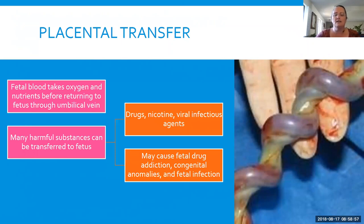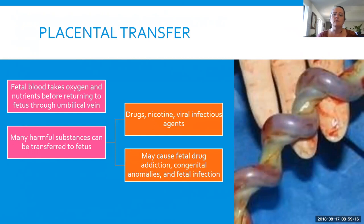The placenta will try to keep some things out, but unfortunately there are some things that get through to the baby. Most drugs get through. Nicotine and viral infections can get through. If mom is using drugs, it will get through to the baby and the baby can become addicted as well. Some of these infections can cause anomalies, especially if they happen early on in development. And the baby can become infected if bacteria or viral agents get through the mother's system through the placenta.